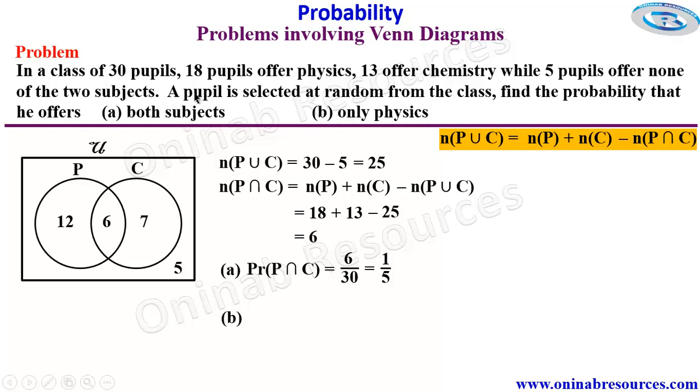So for B, we have to find the probability that a student selected at random from the class offers only physics. Those offering only physics are 12, physics but not chemistry. So the probability of P intersection C prime, as P only, is going to be 12 over 30, and in the simplest form, we have it as 2 over 5.